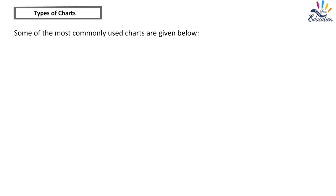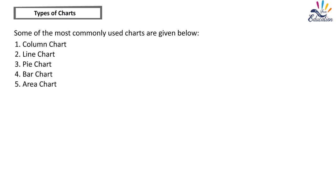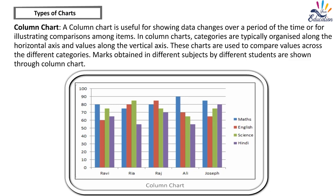Types of Charts: Some of the most commonly used charts are column chart, line chart, pie chart, bar chart, area chart, XY scatter chart, donut chart, and others. A column chart is useful for showing data changes over a period of time or for illustrating comparisons among items. Categories are typically organized along the horizontal axis and values along the vertical axis, and these charts are used to compare values across different categories.